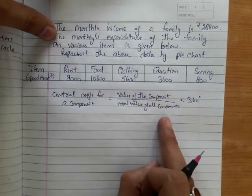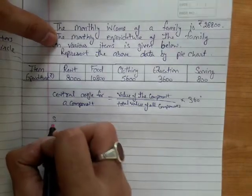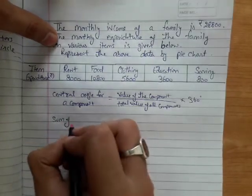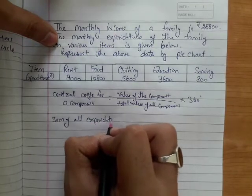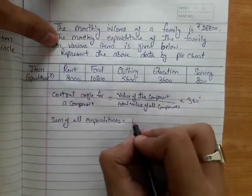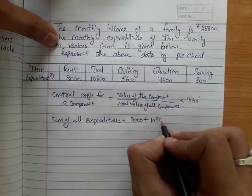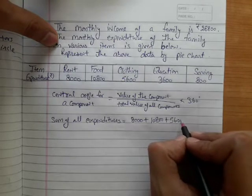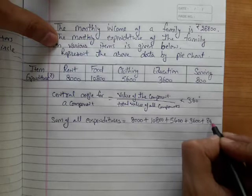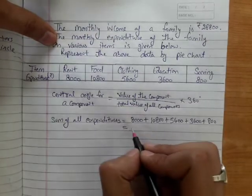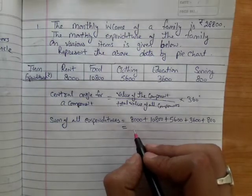Now we find the total value of all components, which is the sum of all expenditures. That is 8,000 plus 10,800 plus 5,600 plus 3,600 plus 800, and their sum equals 28,800.